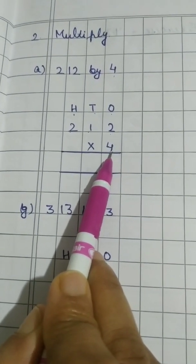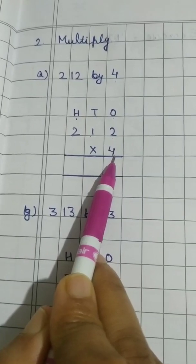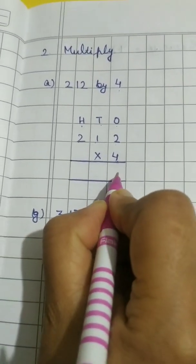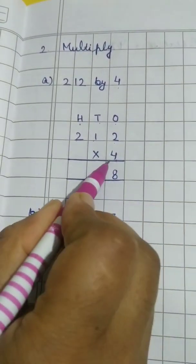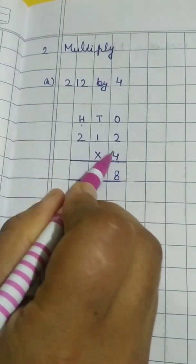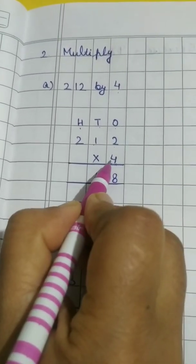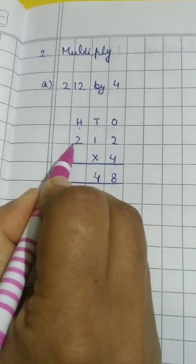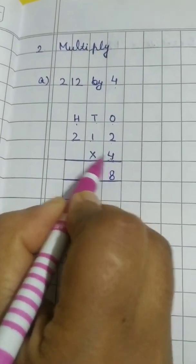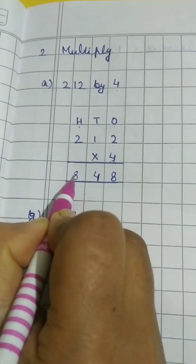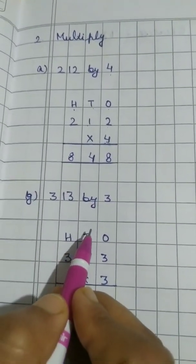We have to take the table of 4. 4 1's are 4. 4 2's are 8. Now turn of the digit at 10's place. 4 1's are 4. Now the turn of 100's place digit. 4 1's are 4. 4 2's are 8. So answer is 848.